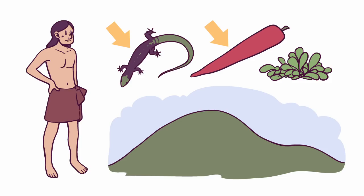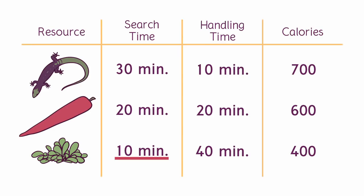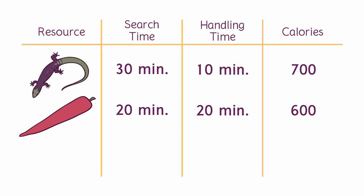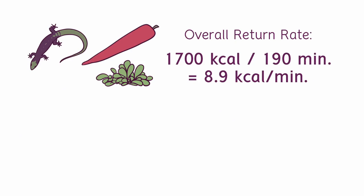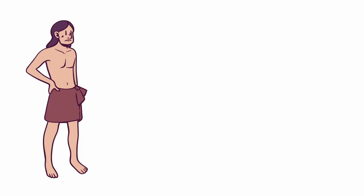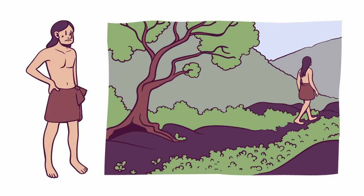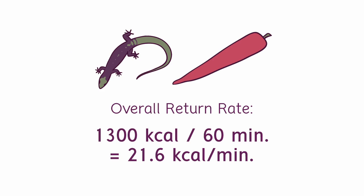So even though the herbs take the least time to find, our forager will ignore them — unless the resources with the higher return rates start getting depleted and become more time-consuming to find. Then the overall return rate with herbs included will be higher than without them. Except that our forager will go find some other hill to forage on long before that ever happens. Hunter-gatherers continue foraging on the same patch of land only for as long as it is worth their while.